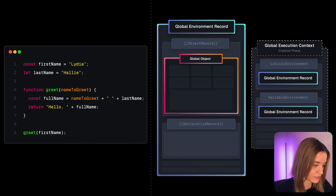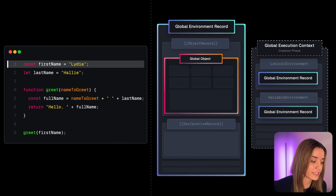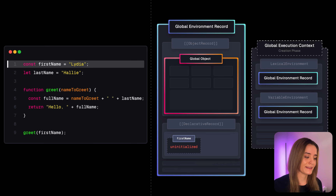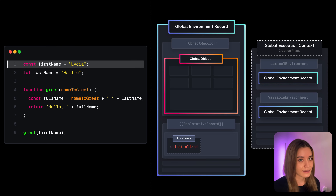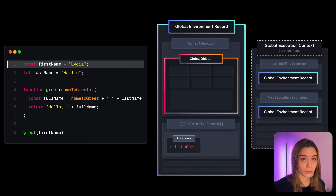Let's look at our script. During the creation phase, it first encounters the variable firstName, declared with const. This uses the lexical environment pointing to the global environment record, which uses the declarative record. Variables created with const and let keywords, and also classes, are uninitialized — memory space is allocated and they're hoisted, but they don't have a value yet until the execution phase.